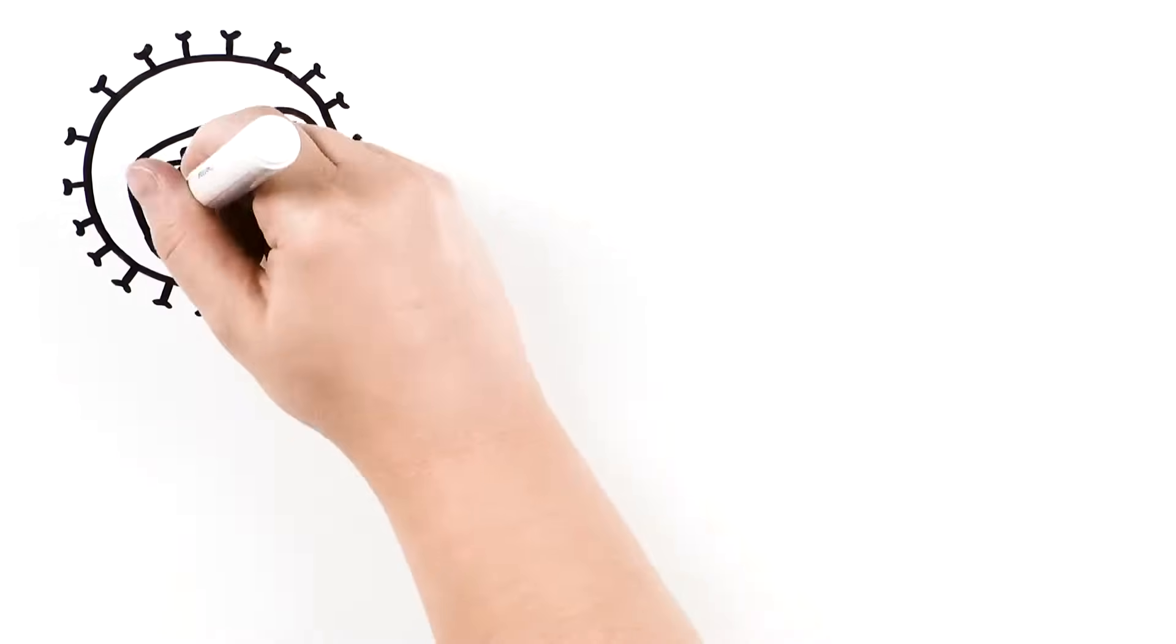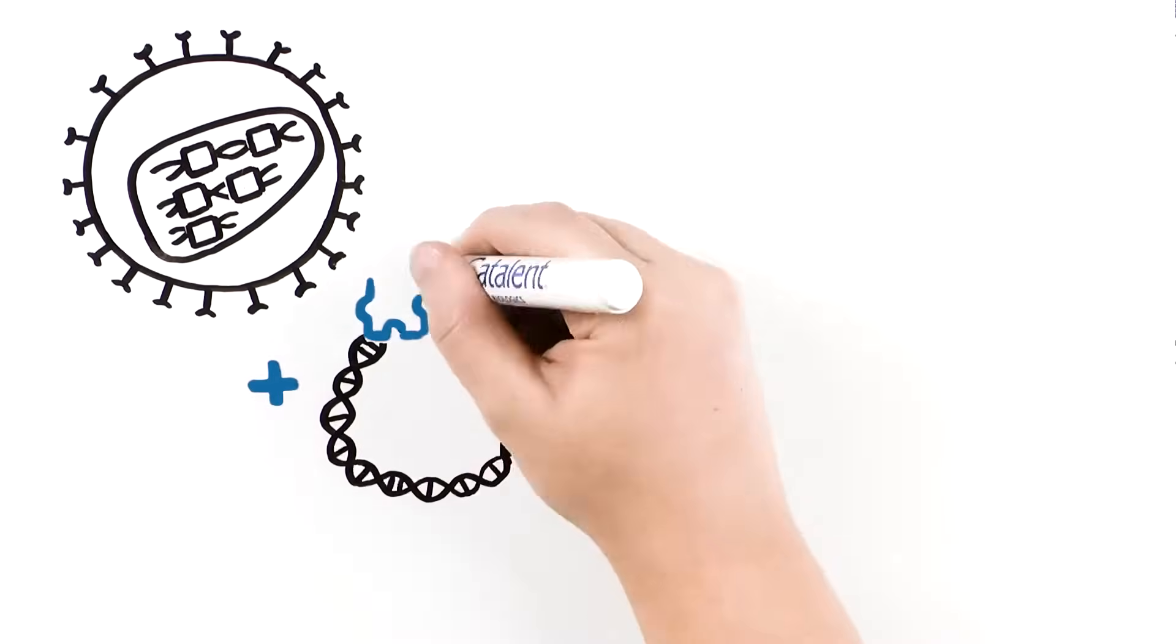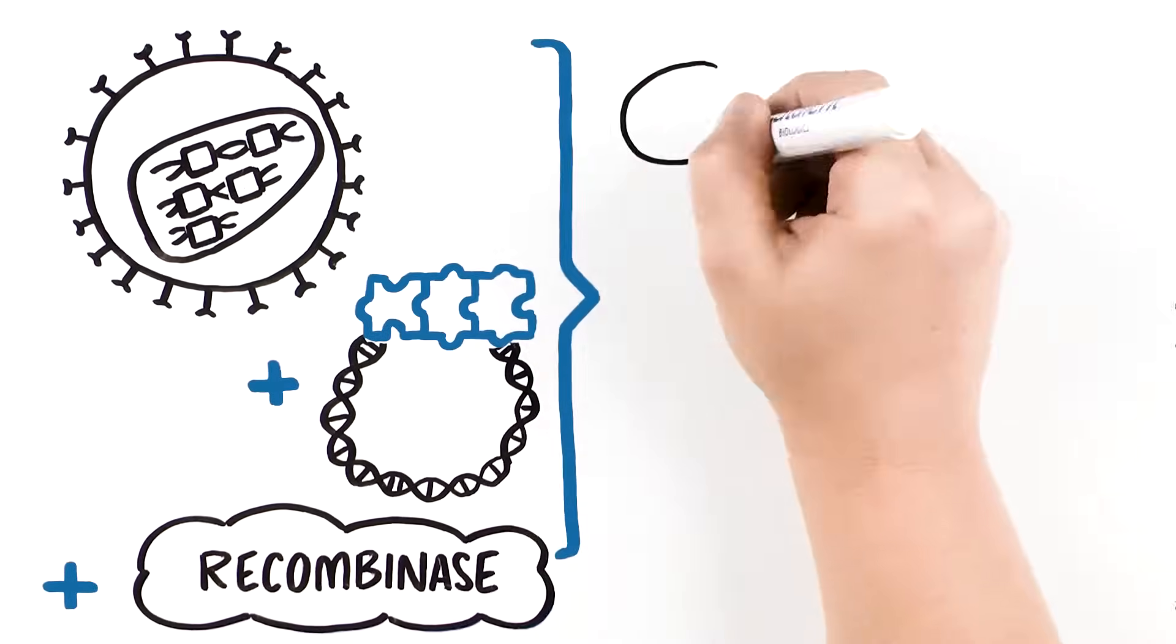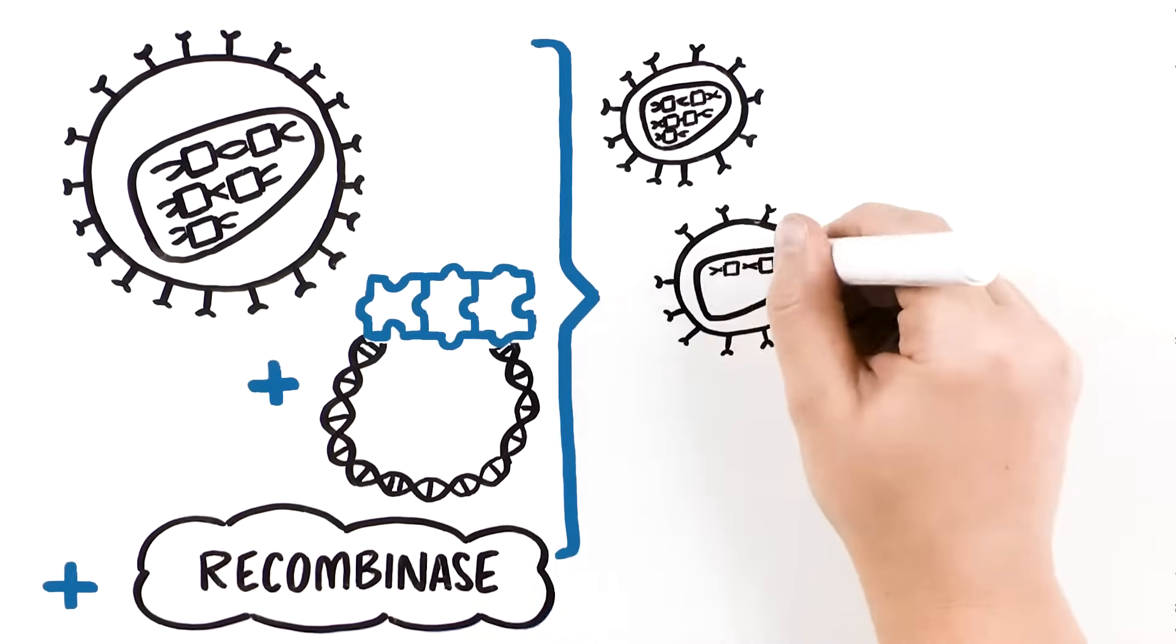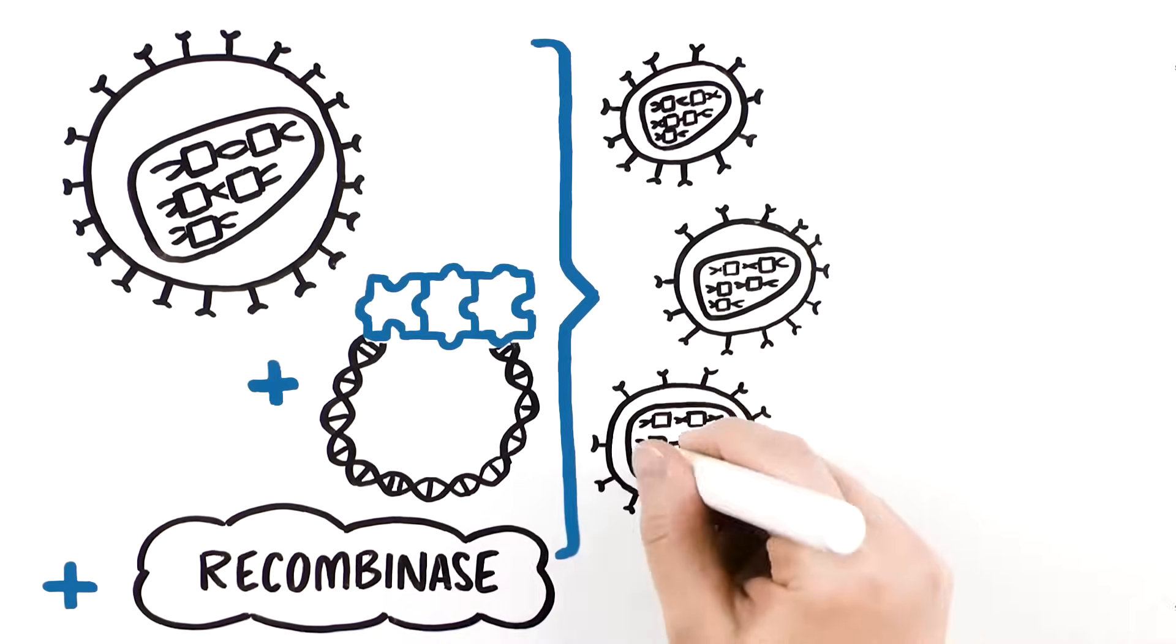The transgene plasmid is then co-transfected into the cell with the recombinase, which mediates insertion of the transgene plasmid, utilizing the recognition sequences in the plasmids and the DOCs in the cell genome.